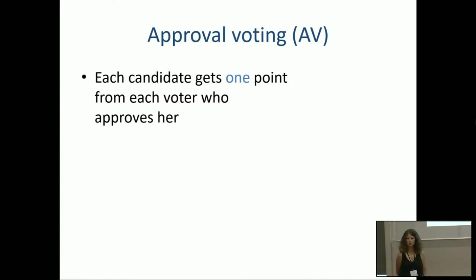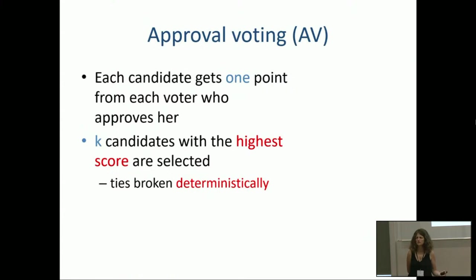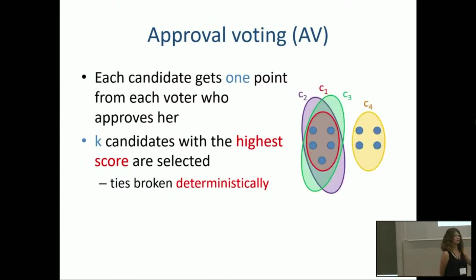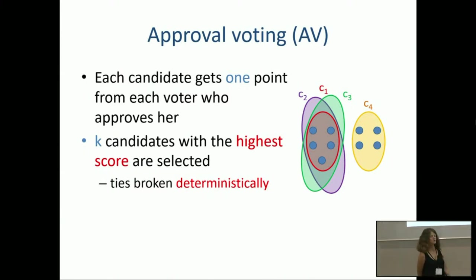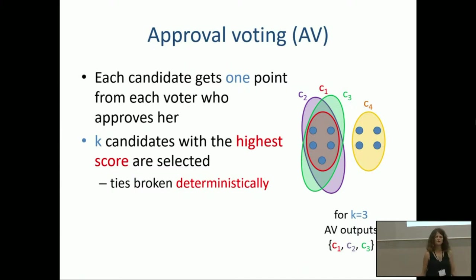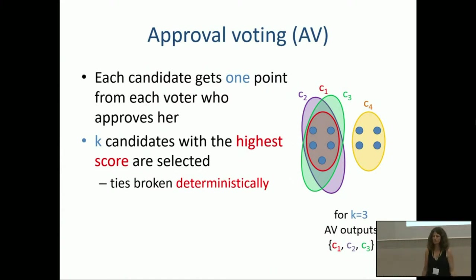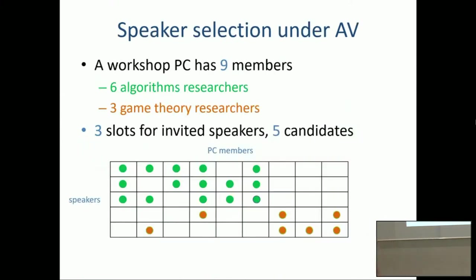If you have approval ballots, the easiest thing you can do is count approvals — this is known as approval voting. Each candidate gets one point from each voter who approves it, and we select the K candidates with the largest number of approvals. In this setting, with five voters approving C1, C2, C3 and four voters approving C4, approval voting selects C1, C2, C3. The group on the right is nearly as large as the group on the left, yet approval voting does not represent them at all. Going back to the workshop example, approval voting will not give us a game theory speaker.